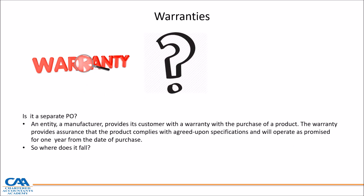An entity or manufacturer provides its customer a warranty for the purchase of a product. The warranty provides assurance that the product complies with agreed-upon specifications and will operate as promised for one year from the date of purchase. This is a general assurance-type warranty and would not be a separate performance obligation. Go to your B28 to B33 to look at the different types of warranties. Assurance-type warranties are dealt with under IAS 37 — provisions, contingent assets, and contingent liabilities. The key issue comes with service-type warranties.